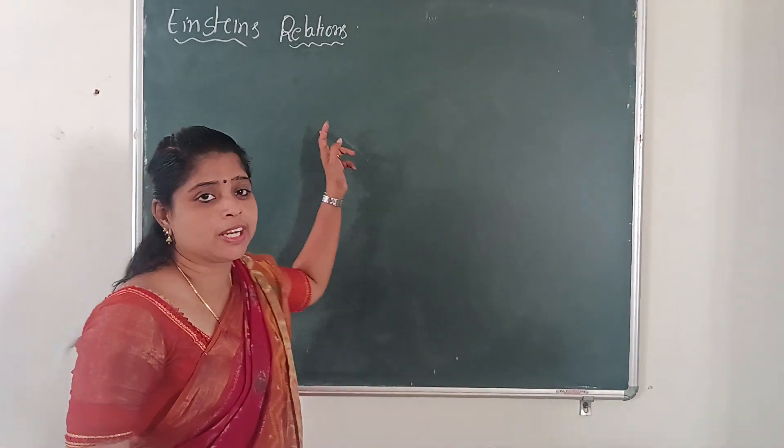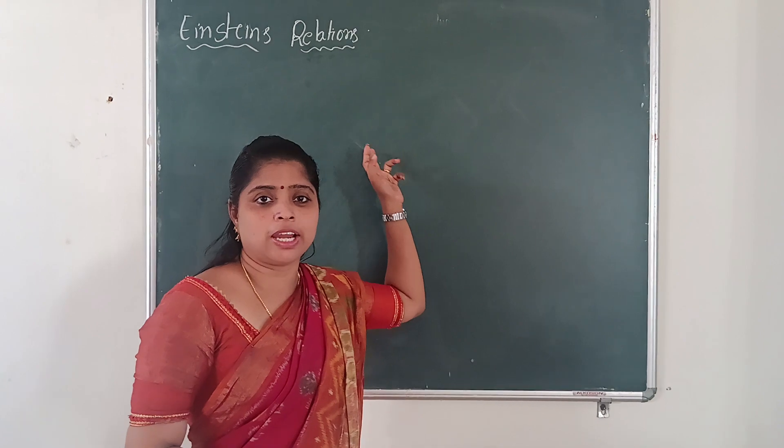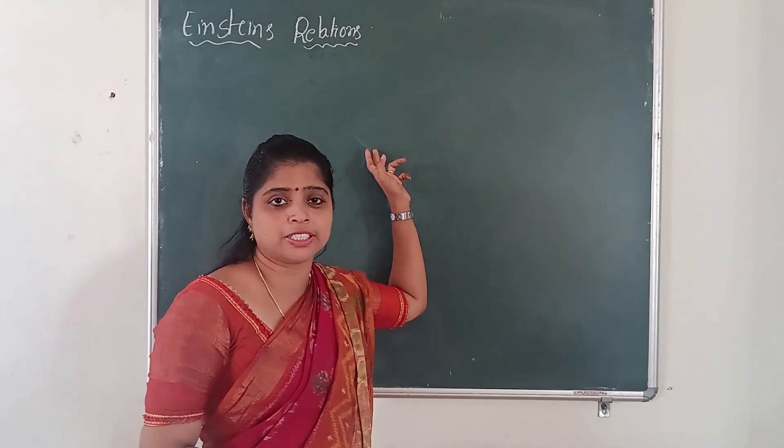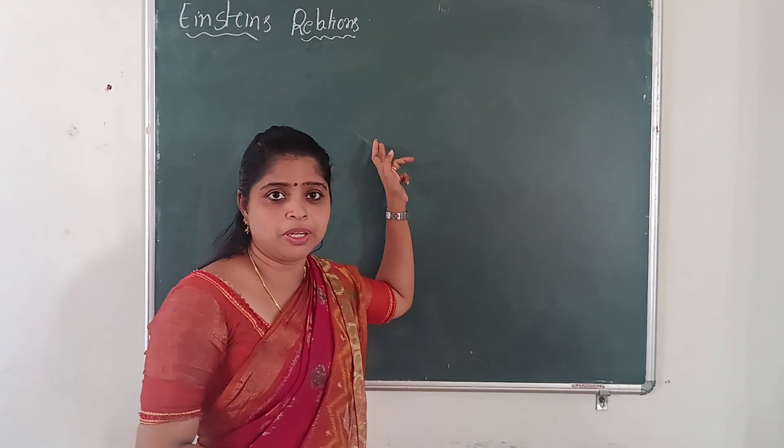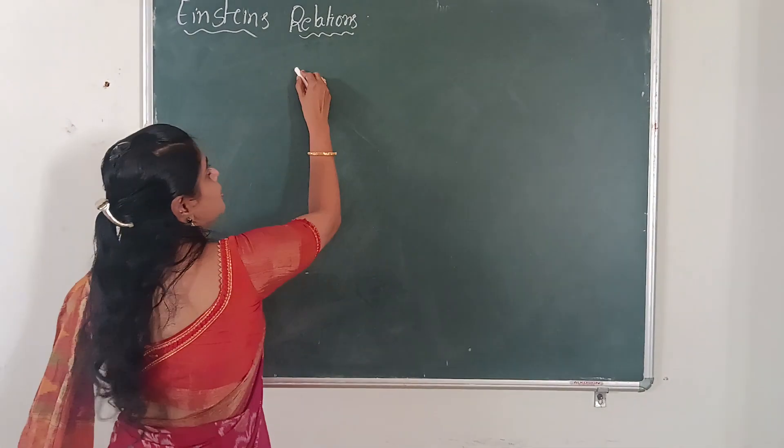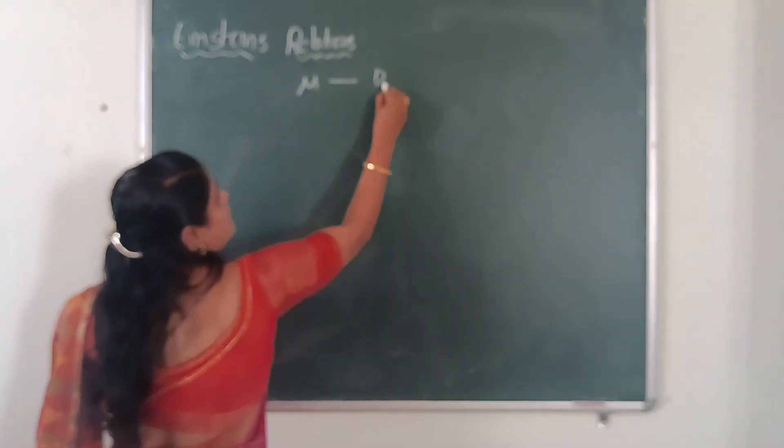So here, how we are getting Einstein's relations and what is known as Einstein's relations. The relation between mobility mu and diffusion coefficient is known as Einstein's relations.